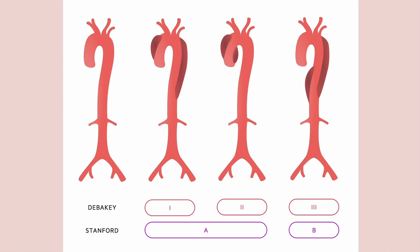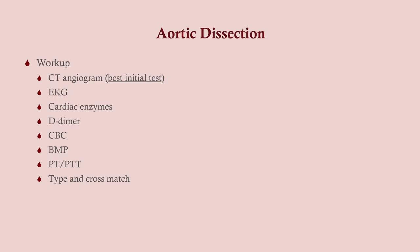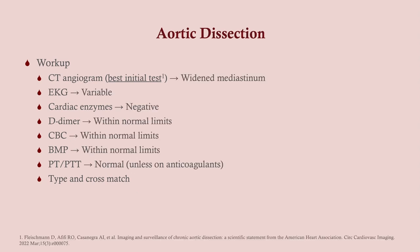The DeBakey and Stanford classifications describe aortic dissection location. DeBakey Type 1 involves both the ascending and descending aorta, Type 2 involves only the ascending, and Type 3 only the descending. For workup: CT angiogram, EKG, and cardiac enzymes — anyone with chest pain gets these regardless of age or severity, they're cheap and help rule out MI. Also order D-dimer, CBC, BMP, and surgical labs: PT, PTT, and type and crossmatch.